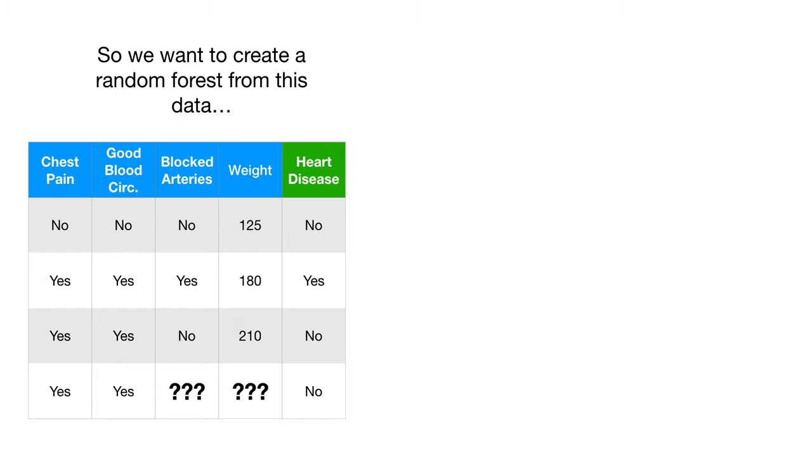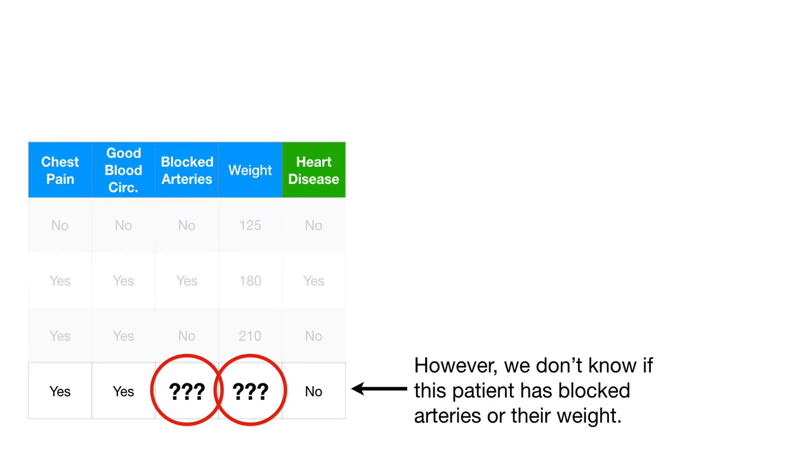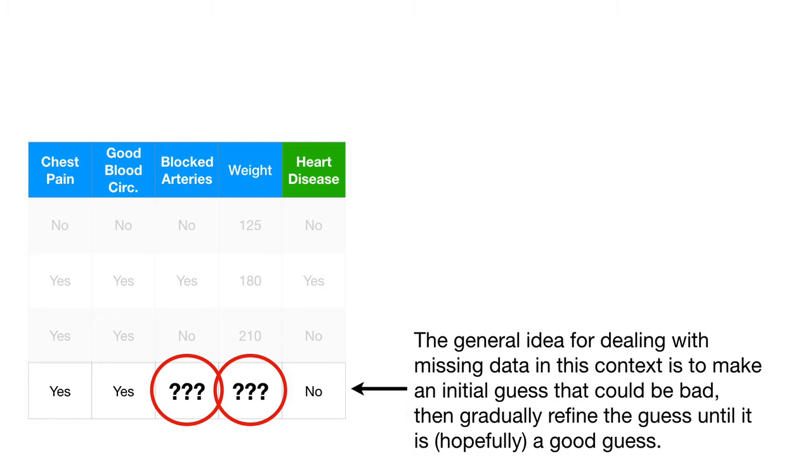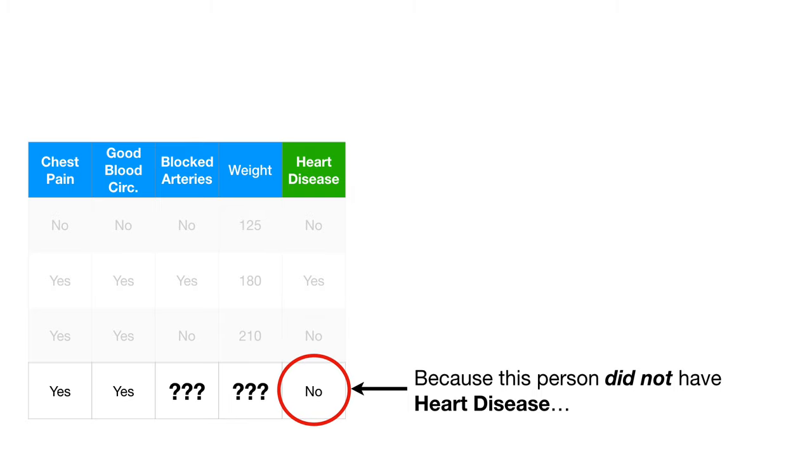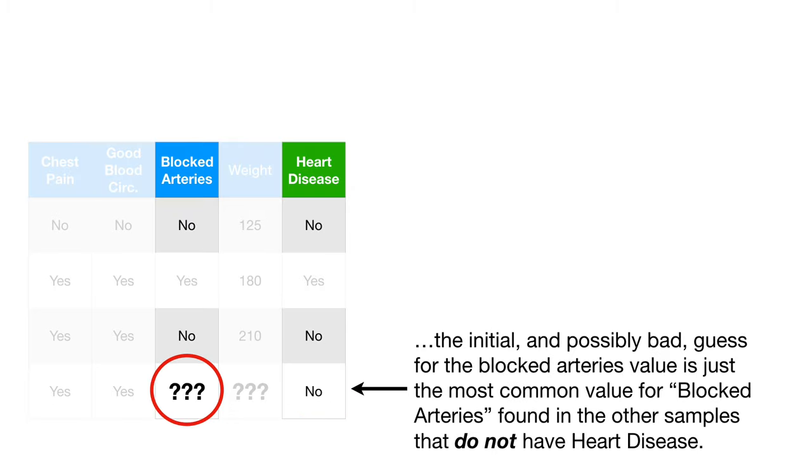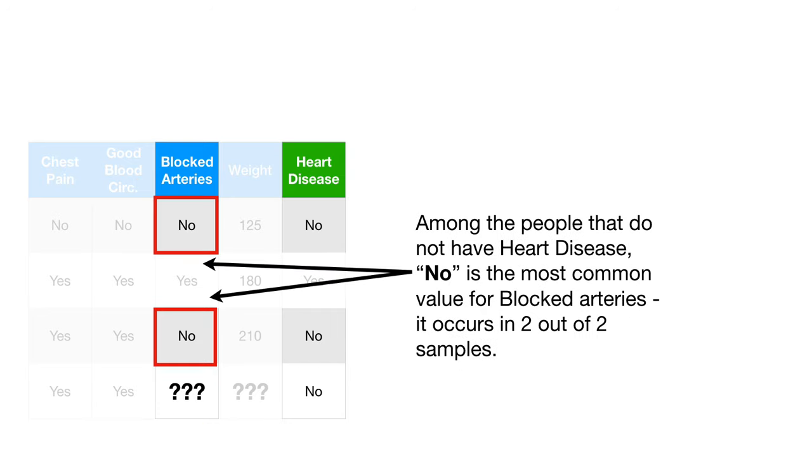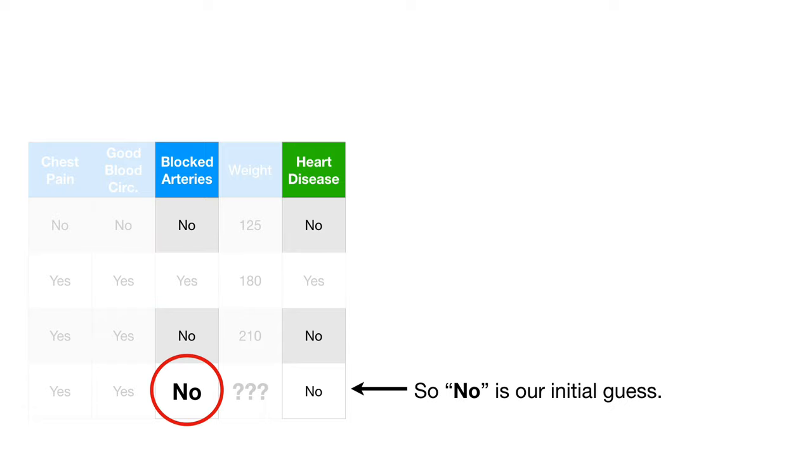So we want to create a random forest from this data. However, we don't know if this patient has blocked arteries or their weight. The general idea for dealing with missing data in this context is to make an initial guess that could be bad, and then gradually refine the guess until it is hopefully a good guess. Because this person did not have heart disease, the initial, and possibly bad, guess for the blocked arteries value is just the most common value for blocked arteries found in the other samples that do not have heart disease. Among the people that do not have heart disease, no is the most common value for blocked arteries. It occurs in two out of two samples. So no is our initial guess.